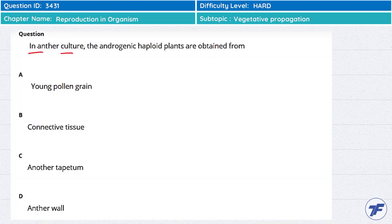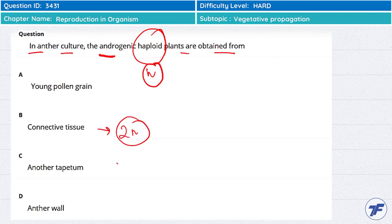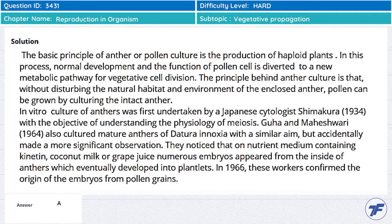In anther culture, the androgenic haploid plants are obtained from pollen grains. The connective tissue is 2n, the tapetum is 2n, so n is the pollen grain. That is why the androgenic haploid plants — the male haploid plants — are obtained from young pollen grains.